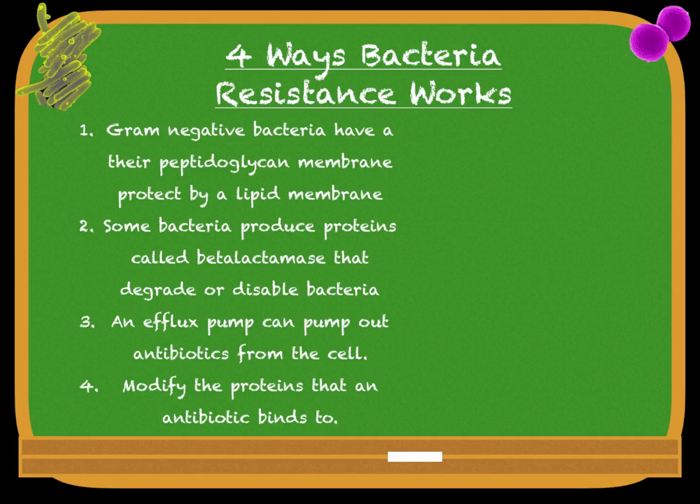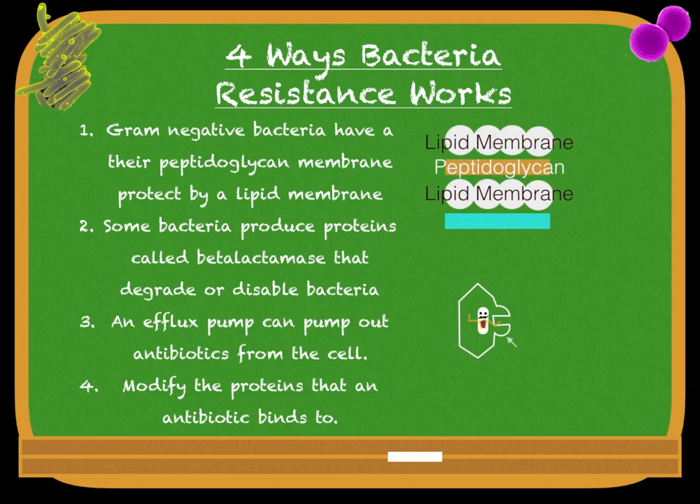Four ways bacteria resistance works: gram-negative bacteria have their peptidoglycan membrane protected by a lipid membrane. Some bacteria produce proteins called beta-lactamases. An efflux pump can pump antibiotics out of a cell. Or the bacteria can modify their proteins.